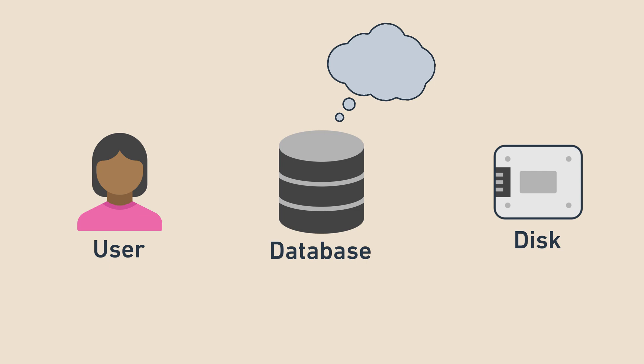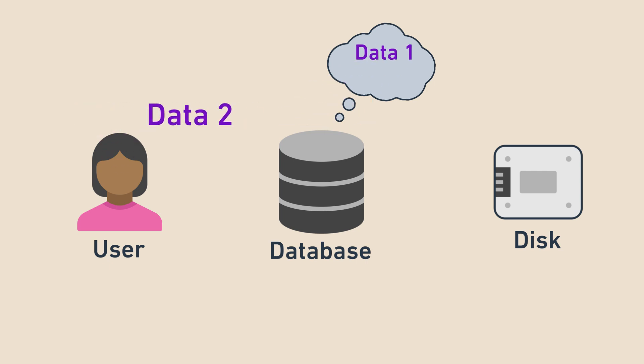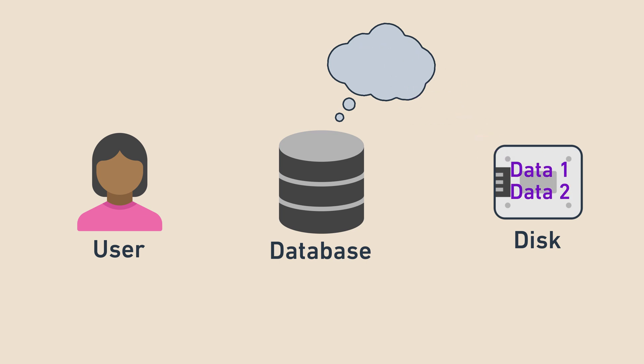However, some databases will delay writing to persistent storage until later so that they can write several updates in one batch. For example, if I ask the database to write data1, then data2, it might hang on to them in memory for a bit and then write them as one batch later. This technique, called batching, increases performance. However, if the database has data that hasn't yet been written and there's a power outage, that data is lost. These databases do not have durability.